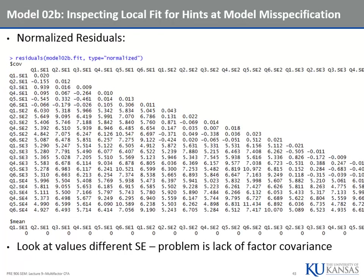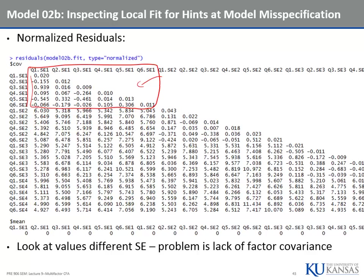Let's look at the normalized residuals. The normalized residuals within this block are very, very tiny. But look at the normalized residuals outside of the block — very big. So we need factor covariances, which is what this is telling us. Same thing with the second block — normalized residuals inside are very tiny, outside very big. Factor covariances would solve that problem.